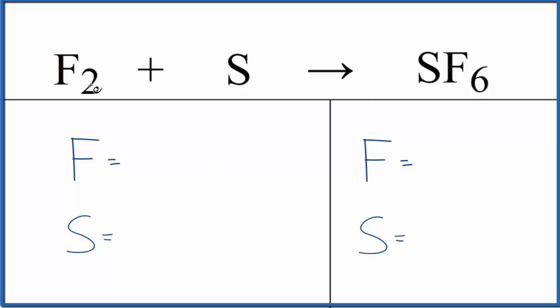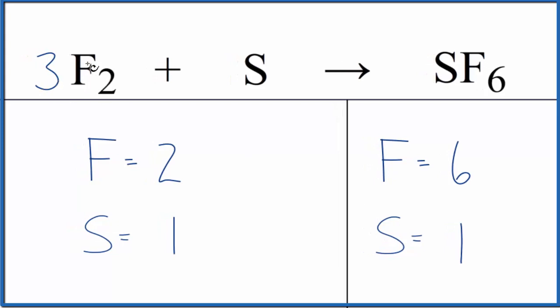To balance it, let's count the atoms. We have two fluorines and one sulfur in the reactants. In the products we have six fluorines and one sulfur. So all we need to do is put a coefficient of 3 in front of the F2, because 2 times 3 gives us 6.